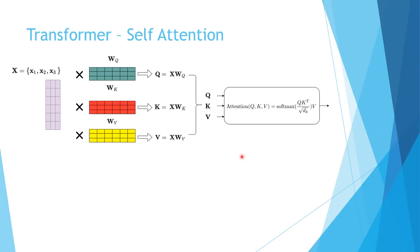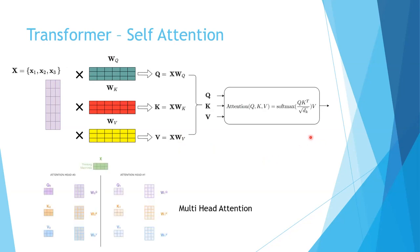The attention weights are computed using the following formula. In practice, multi-head attention is used more commonly. How it differs from normal attention is that there are different key, value, and query pairs for the different heads in the network. Each head performs its own attention computation on its corresponding subspace of the input sequence, resulting in a set of intermediate representations. These intermediate representations are then concatenated and passed through a final linear layer to produce the output of the multi-head attention mechanism.